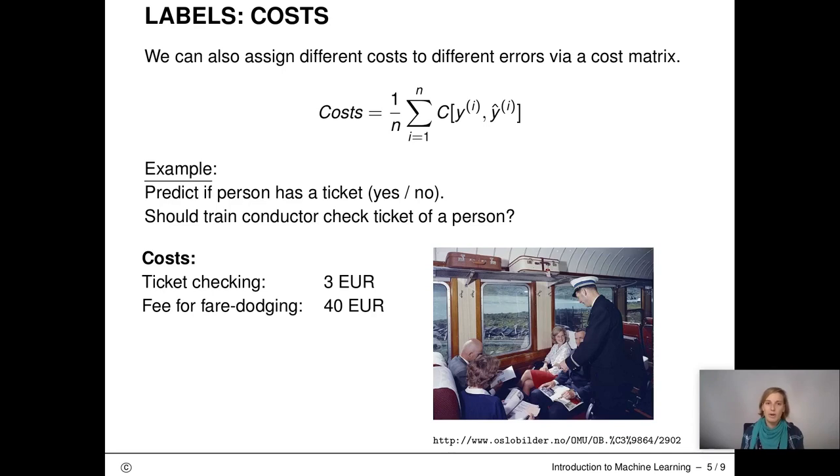You know pretty well what the different costs are here. The required working time of the conductor for checking one ticket corresponds to costs of 3 euros. One ticket on a train costs 10 euros. Not buying a ticket and getting caught however costs a passenger 40 euros. If we predict that a passenger has no ticket, we will check that passenger's ticket. Checking the ticket costs 3 euros, as we said. If we catch someone who does not have a ticket, we will get 40 euros, so resulting in a plus of 37 euros.